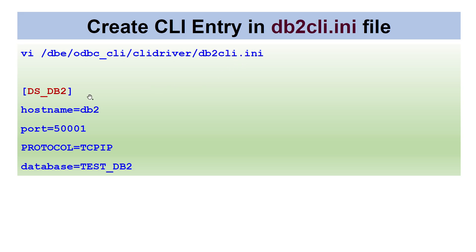The db2cli.ini file stores the connection information. The data source name — for example, datasource_db2 — is your choice, but the parameters are based on your remote database. You configure: the hostname where DB2 is running, the IBM DB2 port, the protocol, and the database name you want to access. This is the entry we will create in db2cli.ini.